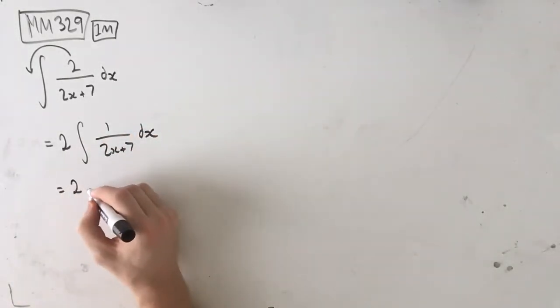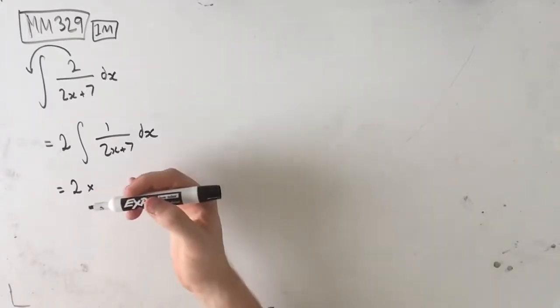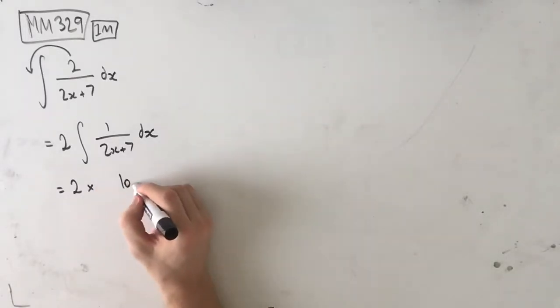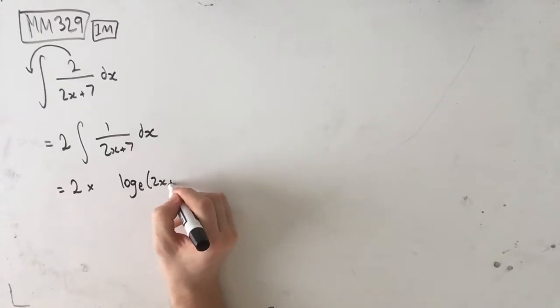Then we can integrate this normally. Our rule for a log is we just do log e of 2x plus 7.